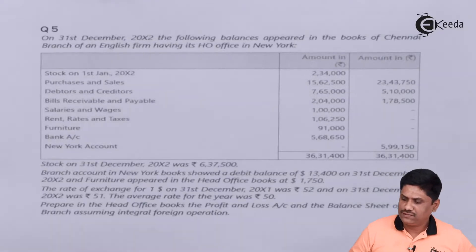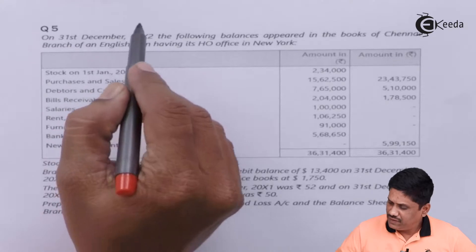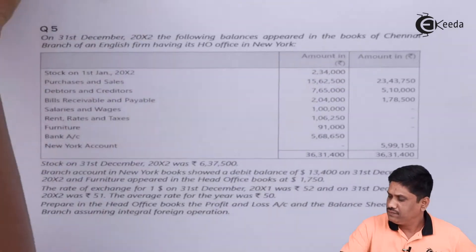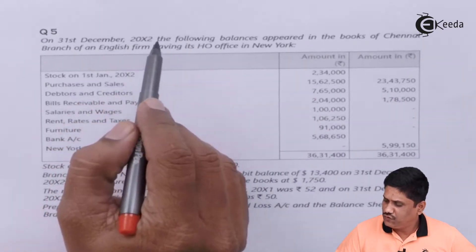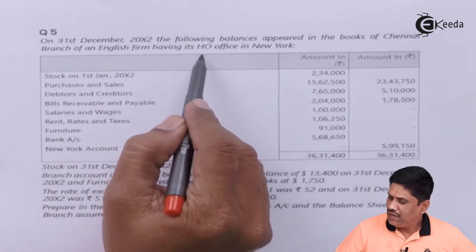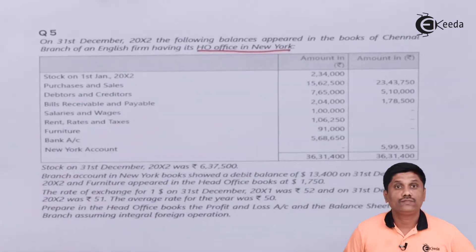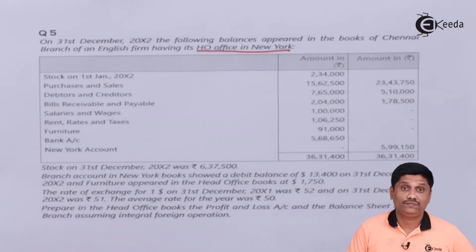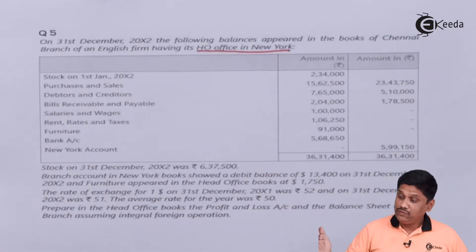Let's read the question. On 31st December 2002, the following balances appeared in the books of Chennai branch of an English firm having its head office in New York. The head office is in New York and the branch is in India, so we are going to convert rupees to foreign currency.